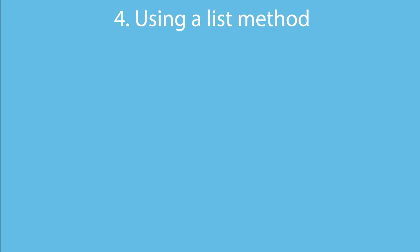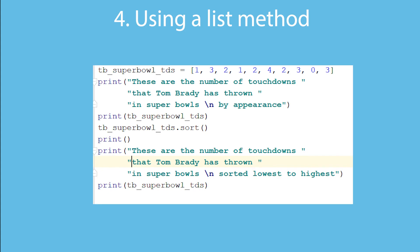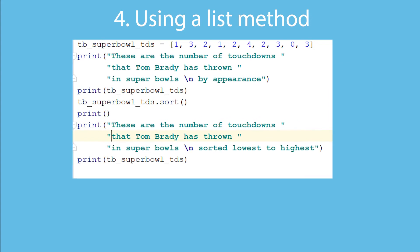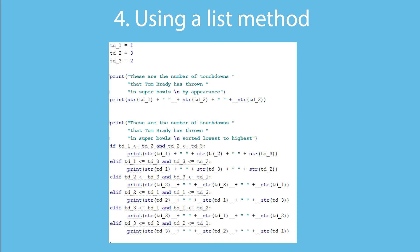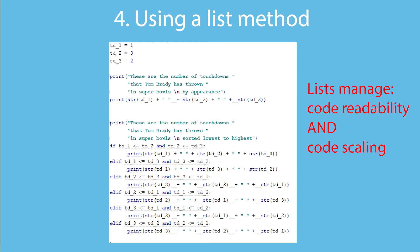The fourth example is using a list method — in this case, sort. A list method is a function associated with a list, meaning it's only available because you're using a list. Appending is one specific list method, but almost any list method will score you the point. In this example I start with a list of numbers matching Tom Brady's touchdowns in Super Bowls and I use sort to sort them. Looking at the code without the list, it's hard to read — I didn't even finish it because it's so long. The actual number of lines has to do with factorials, which is terrible scaling. Using the sort method helps manage the complexity of both code readability and code scaling.